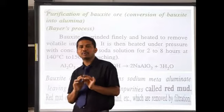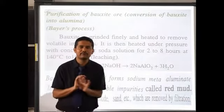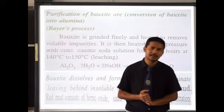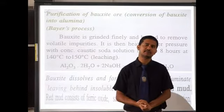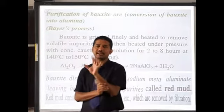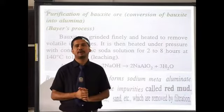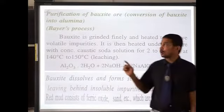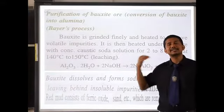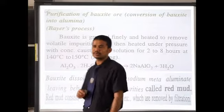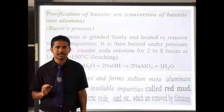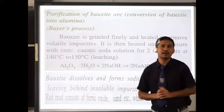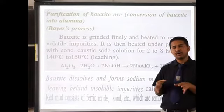Step one is crushing and grinding — the ore is ground very nicely and then heated so that water and volatile impurities can be removed. In step two — concentration of ore — the chemical method, leaching, is used because aluminium oxide (bauxite, Al₂O₃·2H₂O) dissolves in concentrated caustic soda solution, leaving behind the impurities.